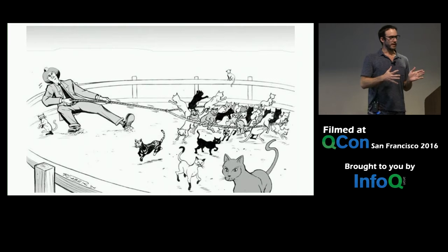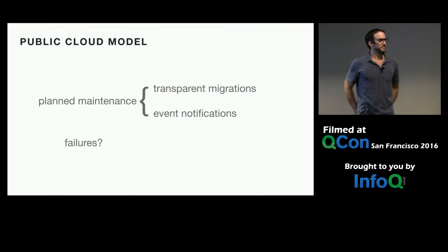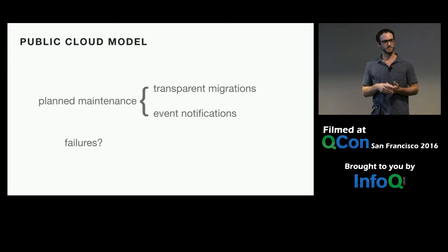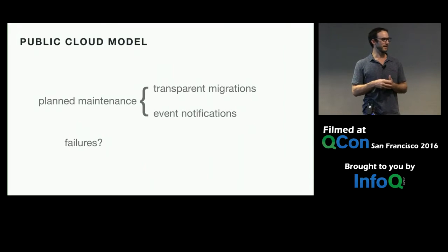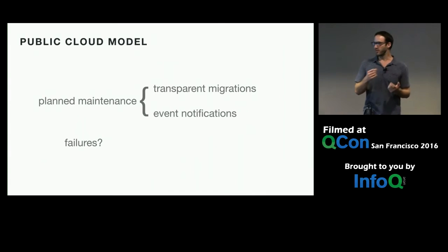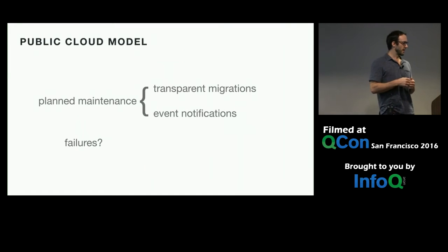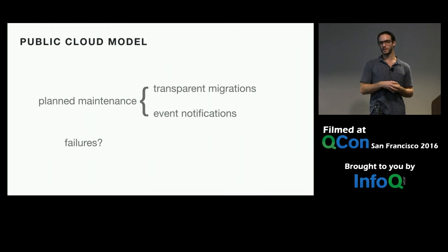How do public clouds deal with this problem? They devote a huge engineering effort to hide this from customers — things like transparently migrating your VM from one host to another without you noticing, or even moving TCP connections behind you. Or they'll live-patch the system underneath your VMs. All of these things can work most of the time, but they require considerable effort and they're not perfect. Sometimes they do have to notify you of upcoming maintenance events, and they're not fundamentally immune to unexpected failures.